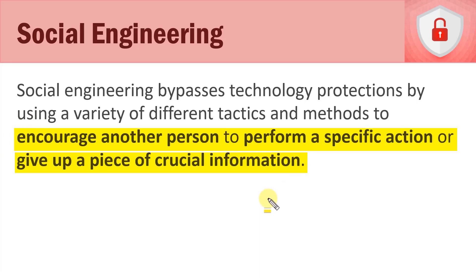A very common way that people perform social engineering is that they'll call somebody, impersonate someone, and try to get that person to provide information or perform a specific action. A common example here in the United States involves scammers, typically out of India, impersonating IRS agents. They'll call people saying they owe money, that there's a lien on their house, or a warrant out for their arrest, demanding payment within a certain number of days or hours — otherwise a sheriff's deputy will arrive to arrest them — with the goal of getting the person to send them money.